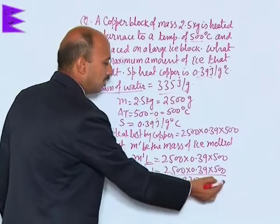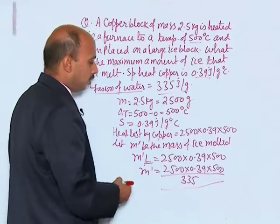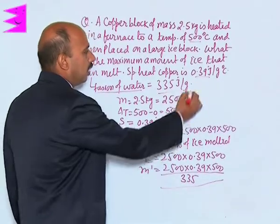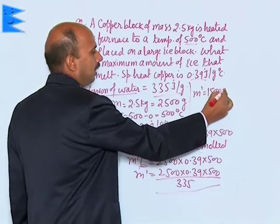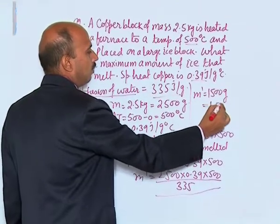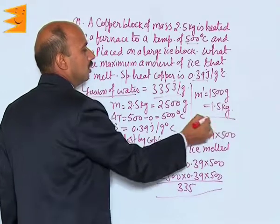When you solve it, you will be getting approximately m dash is equal to 1500 gram and you will be getting around 1.5 kg. So, this much ice will melt.